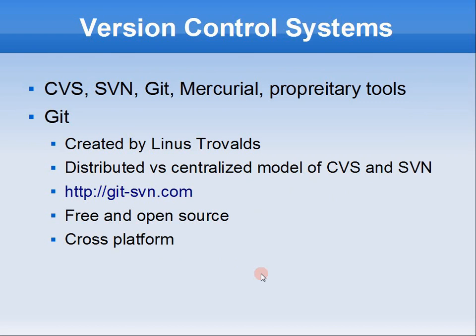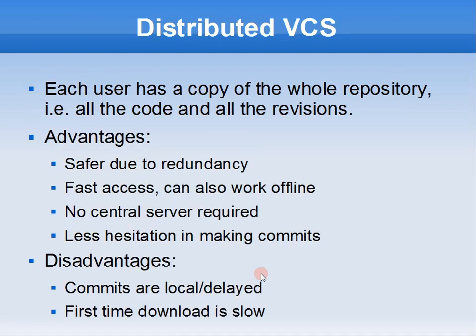And Git was created by Linus Torvalds, and it's different from the others — at least from most of them — because it's distributed. Most of these systems have a central repository where all your changes and log files are stored. In Git, it's distributed, and we'll talk about that. It's open-source and cross-platform, and he has an hour-long talk about why Git is so much better than SVN. It actually is pretty better — it's superior to SVN and others.